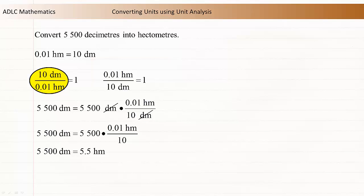Let's look at what would have happened if we'd chosen the other conversion ratio. Again, multiply the original measurement by the conversion ratio and evaluate. Multiplying decimeters by decimeters gives decimeters squared. This product is then divided by hectometers, giving the unit of decimeters squared divided by hectometers.